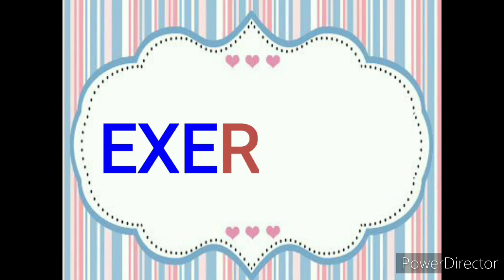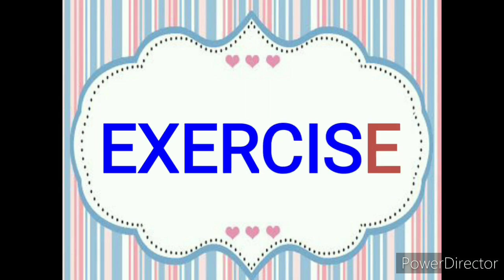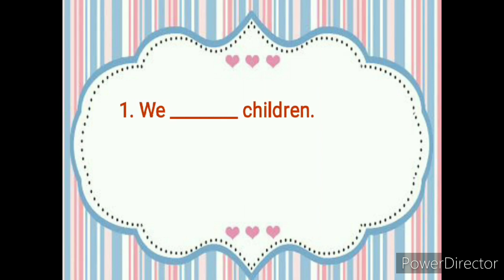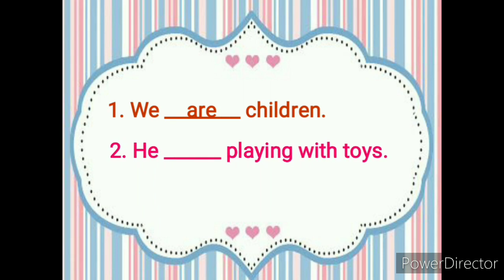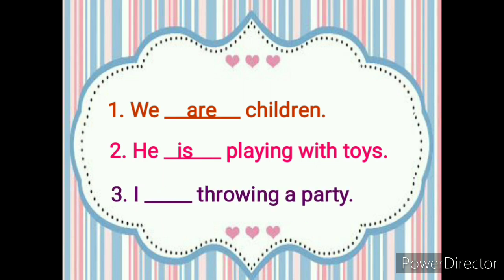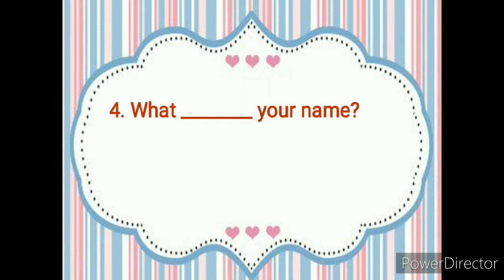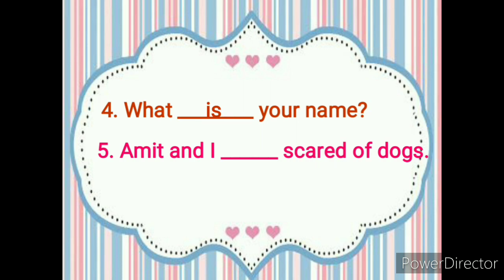Let's do a small exercise now. We dash children. 'We' is a plural word, so we will write 'are'. He dash playing with toys. 'He' is a singular word, so we will write 'is'. I dash throwing a party. With 'I', we use 'am'. What dash your name? We are asking a particular person, so we will use 'is'. Amit and I dash scared of dogs. 'Amit and I' means two persons, so we will write 'are'.